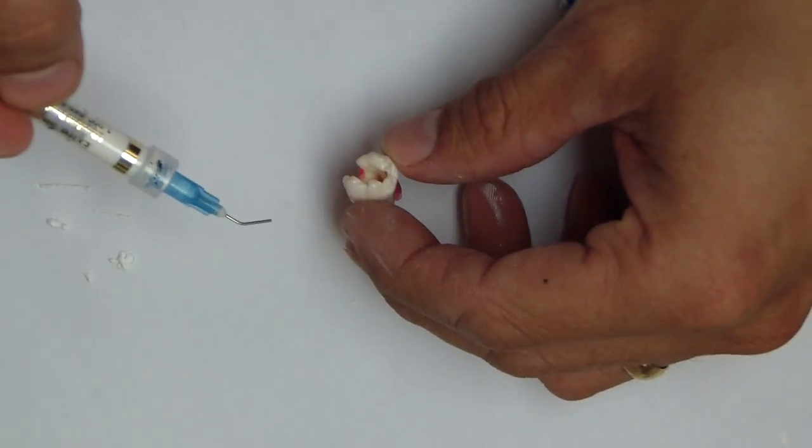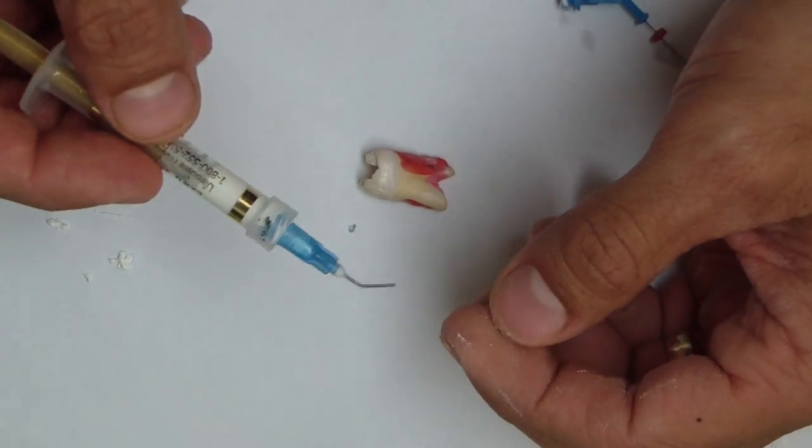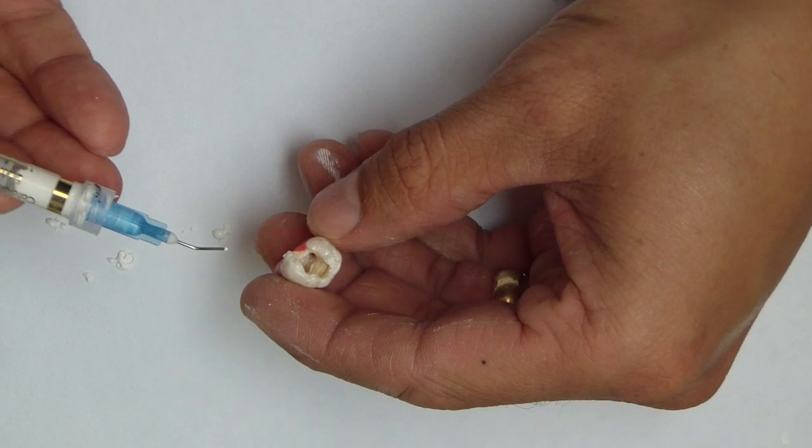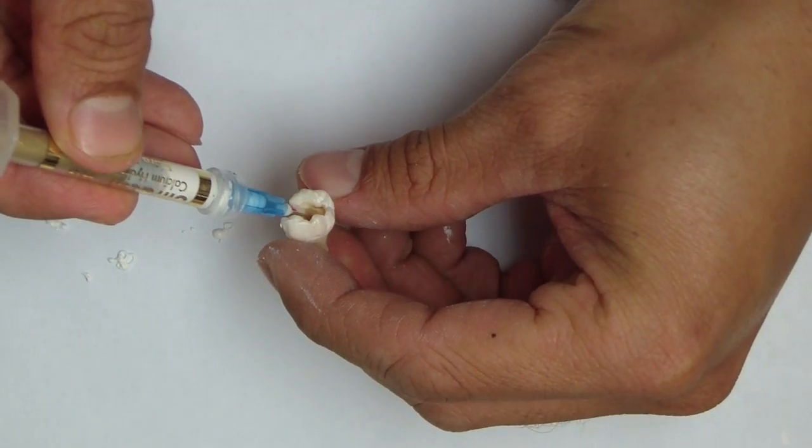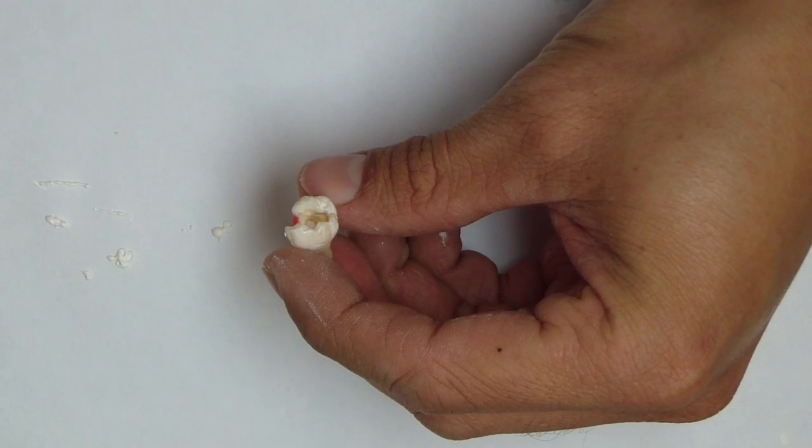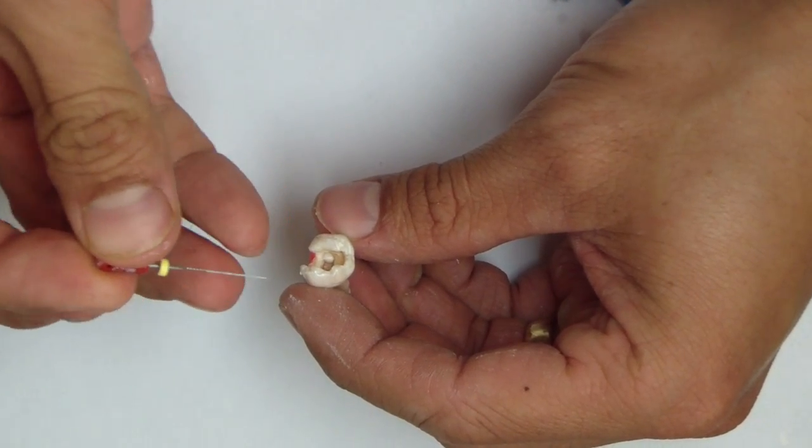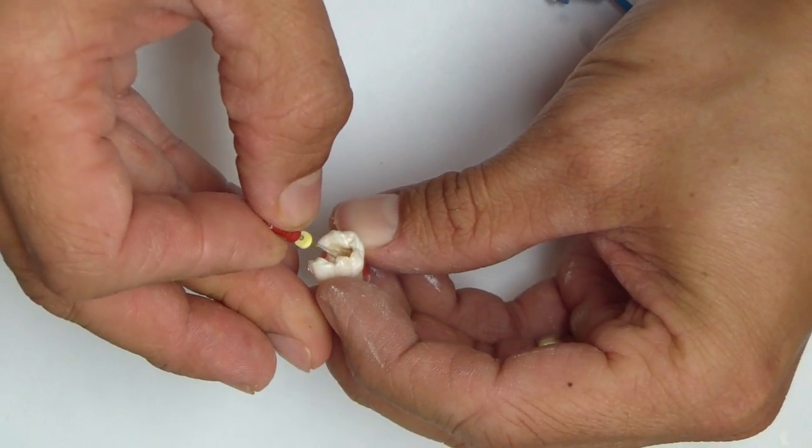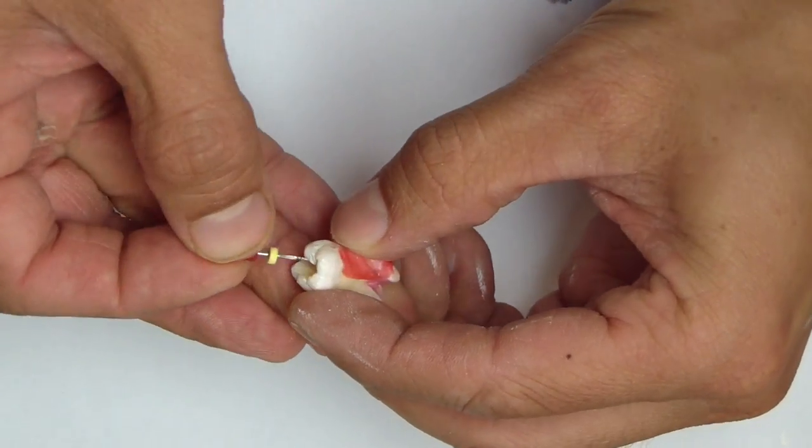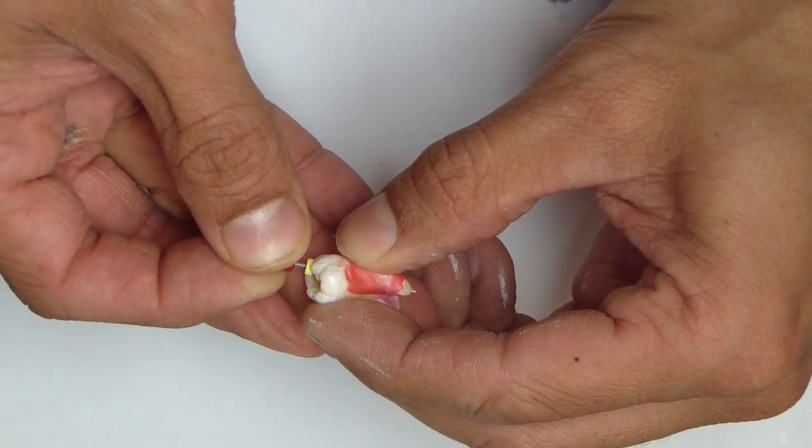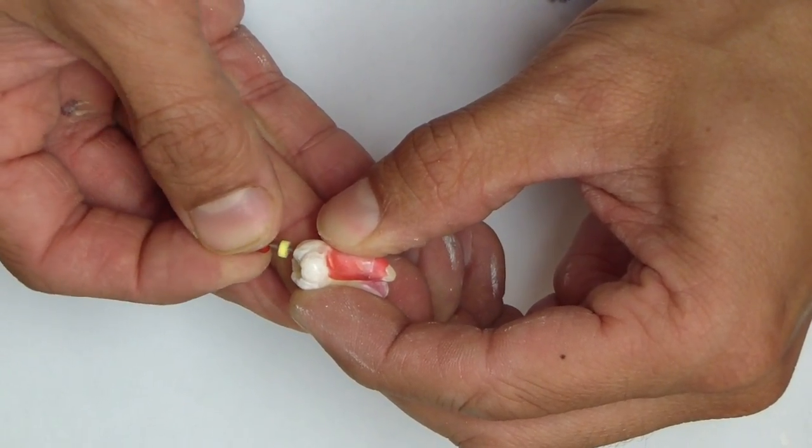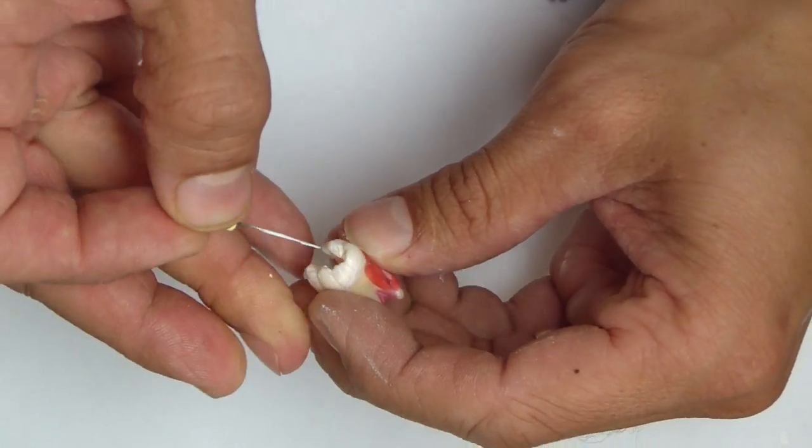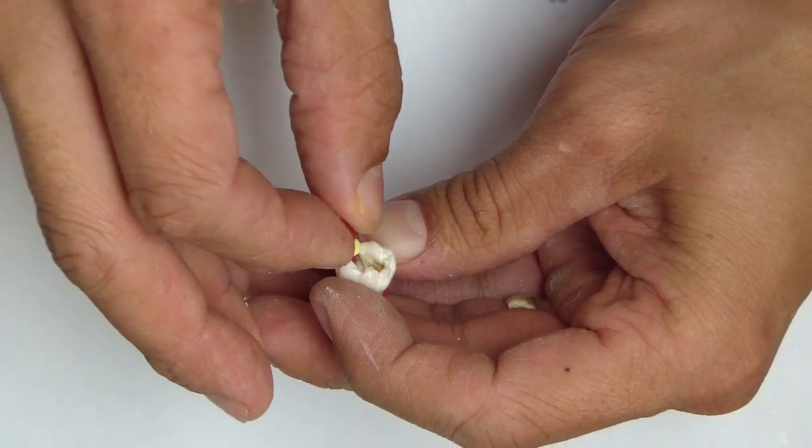This is what I used to do: I'd take my Ultracal or whatever calcium hydroxide material you're using, place a little at the orifice—because I had nothing else and didn't know any better—and I would take a K-file after I've instrumented the canals, go to my working length and sort of mix it in there, just looking to get a decent coating of the entire canal. I'm trying to prevent getting that file out the apex. So I've coated the walls—that's one way of doing it.